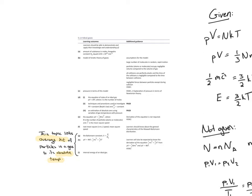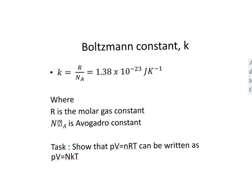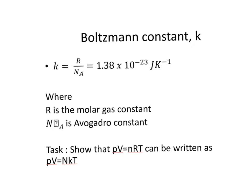We will be introducing Boltzmann's constant, which is made from two other constants, and then we'll see how two equations can be used to derive another one. Ludwig Boltzmann was a physicist who helped relate the macroscopic properties of gases, like temperature and pressure, to the microscopic properties of particles, so they named this constant after him out of respect. Boltzmann's constant is the molar gas constant divided by Avogadro's constant, and this value will be given to you in the formula booklet.